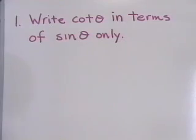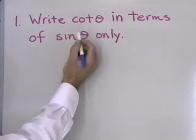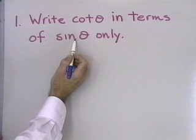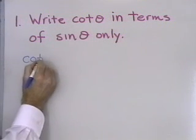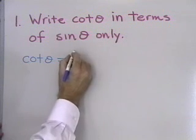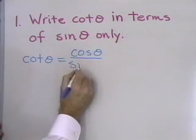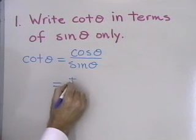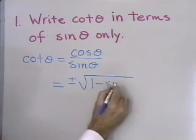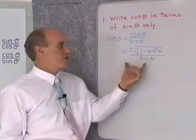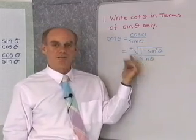Let's look at our first problem. For problem number one, write cot in terms of sin only. This is just practice at using the identities, but every trigonometric function can be written in terms of every other trigonometric function. So let's start with cot θ. I'm going to rewrite this in terms of sin only, starting by writing it as cos θ over sin θ, because that's one of my ratio identities. Now cos θ I can write in terms of sin — it's plus or minus the square root of 1 minus sin²θ — and that's all over sin θ. So here we have an expression for cot θ that involves only sin θ.